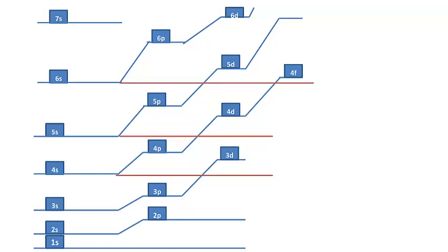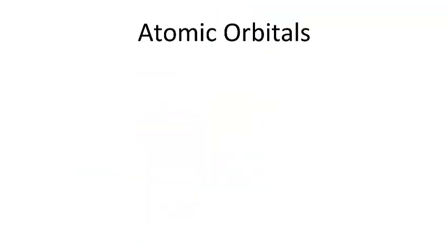So in each of those sublevels are a number of atomic orbitals. In a 1S sublevel, there's one atomic orbital. There are three atomic orbitals in a P sublevel. So 2P, 3P, 4P. There are five atomic orbitals in the D sublevels. And there are seven atomic orbitals in the F sublevels. And the electrons, the students, go and fit into those orbitals. So this concept of atomic orbitals, I want to talk a little bit about that.